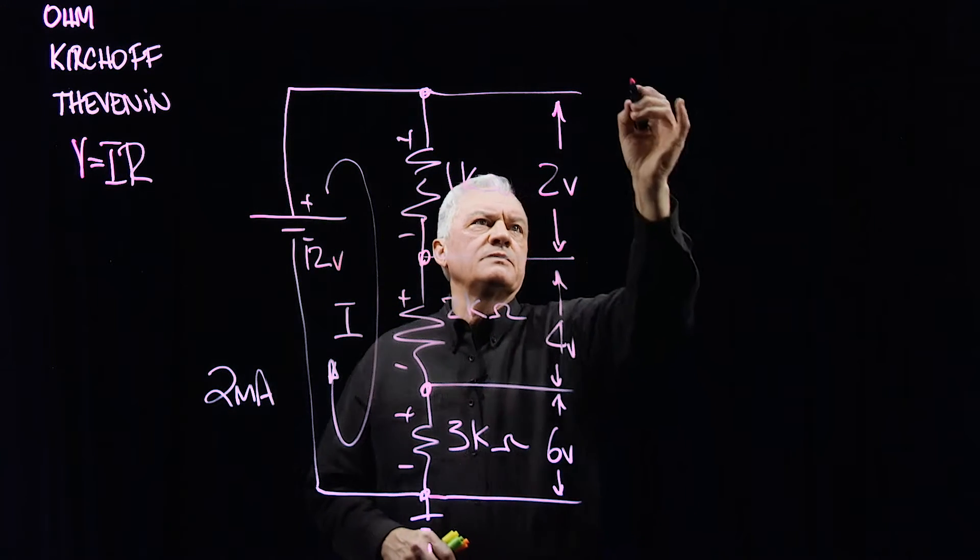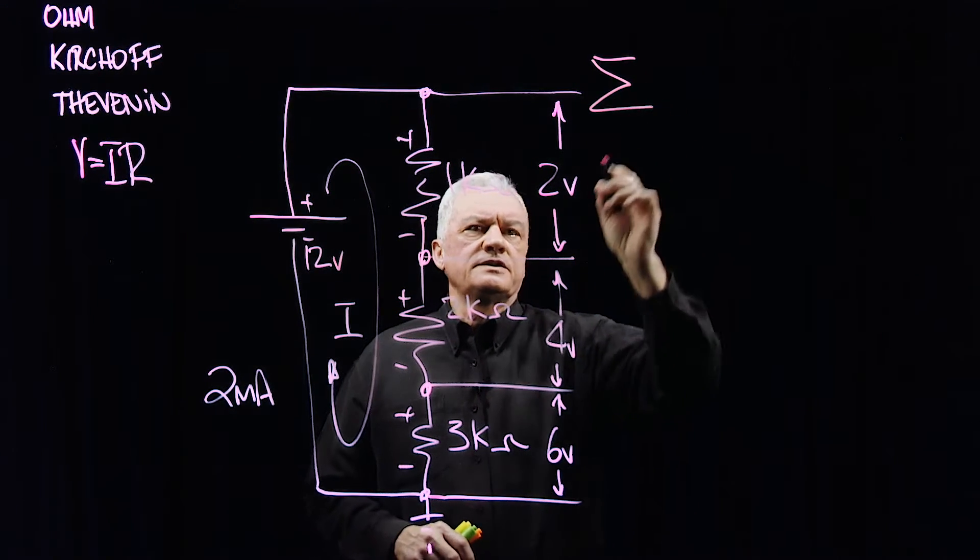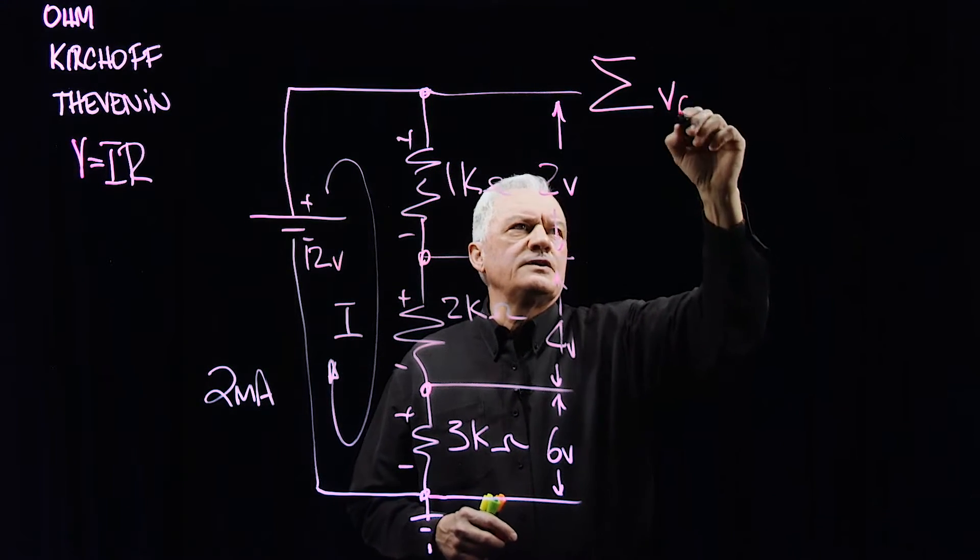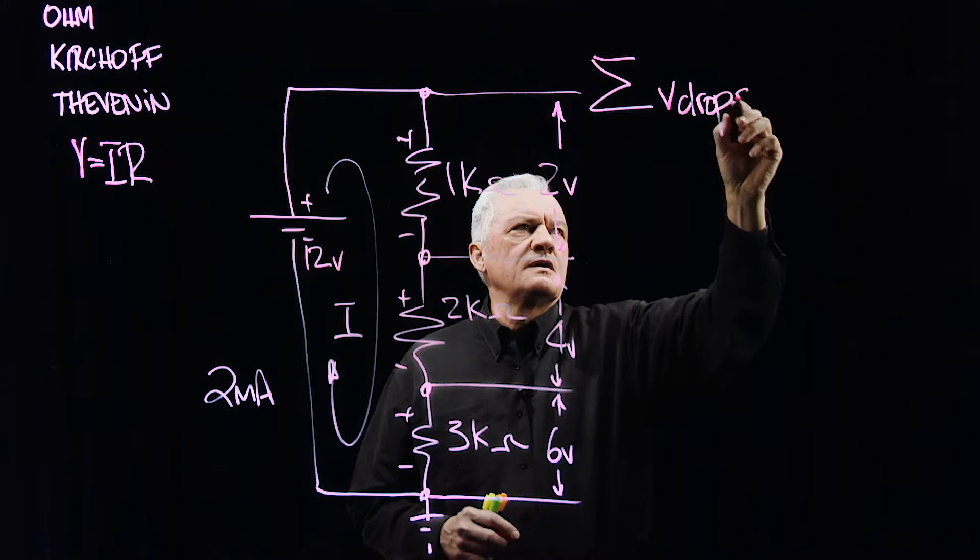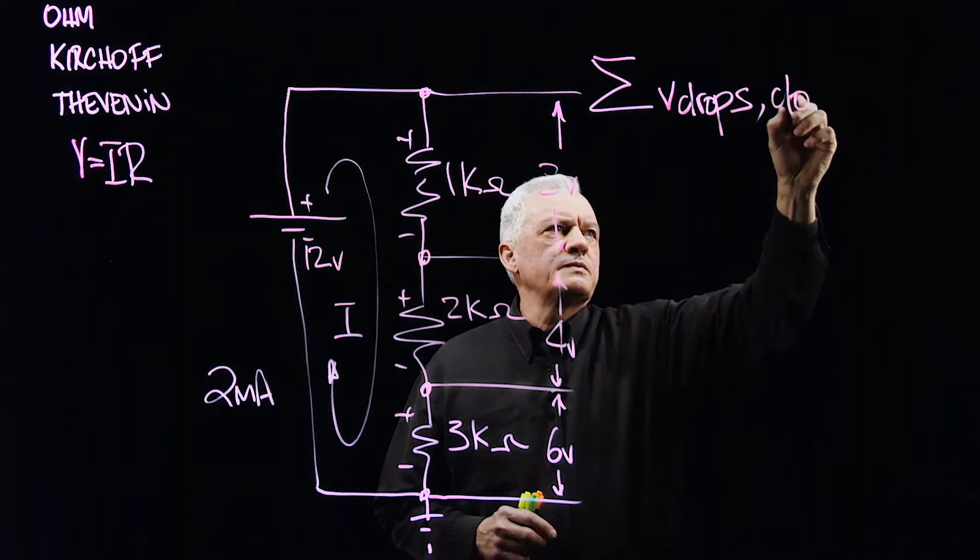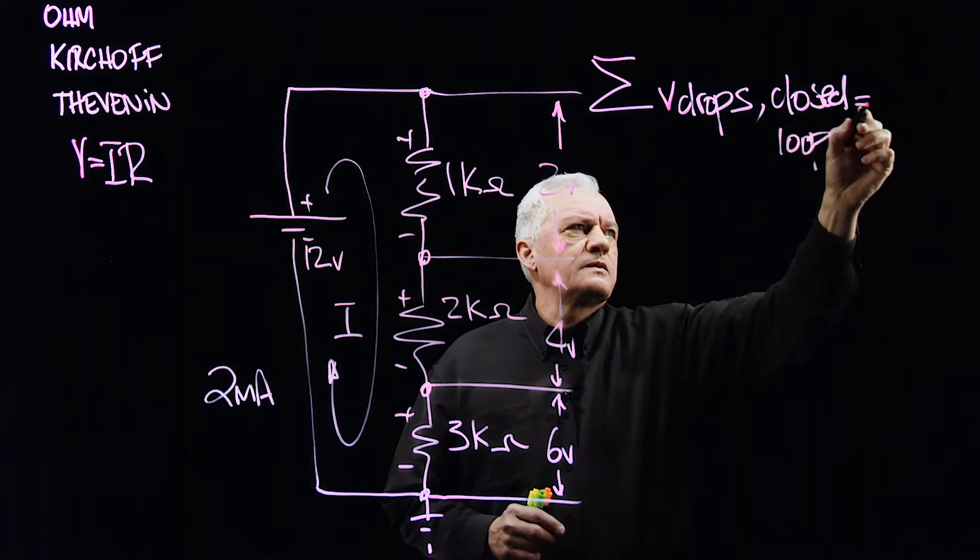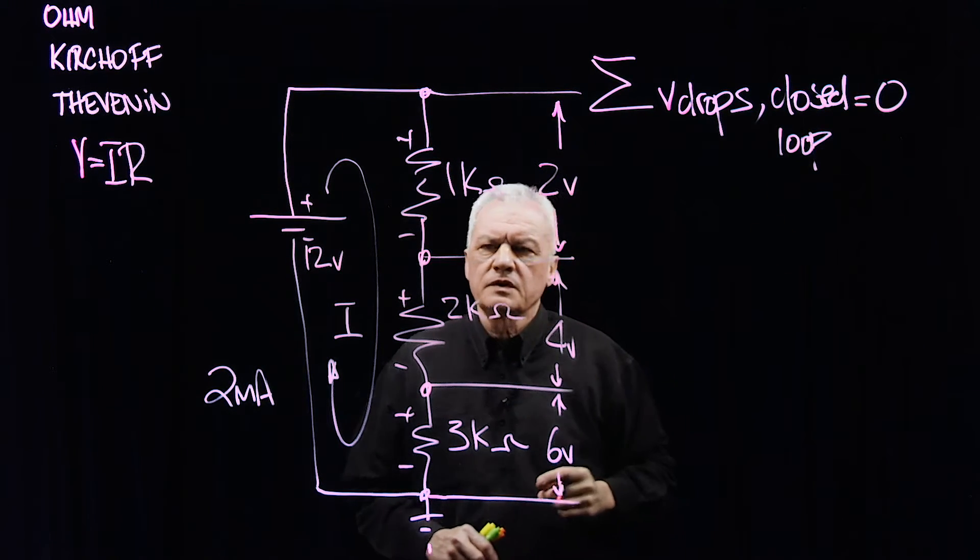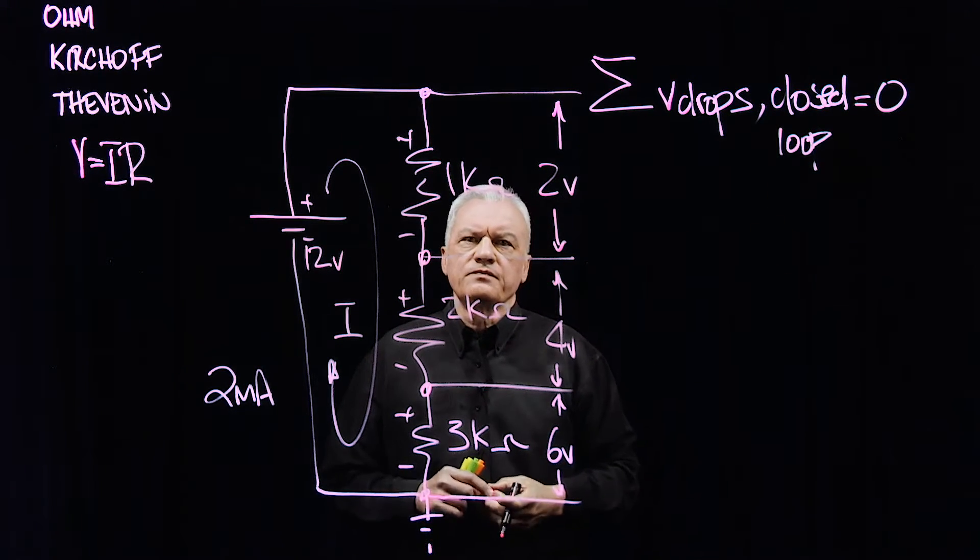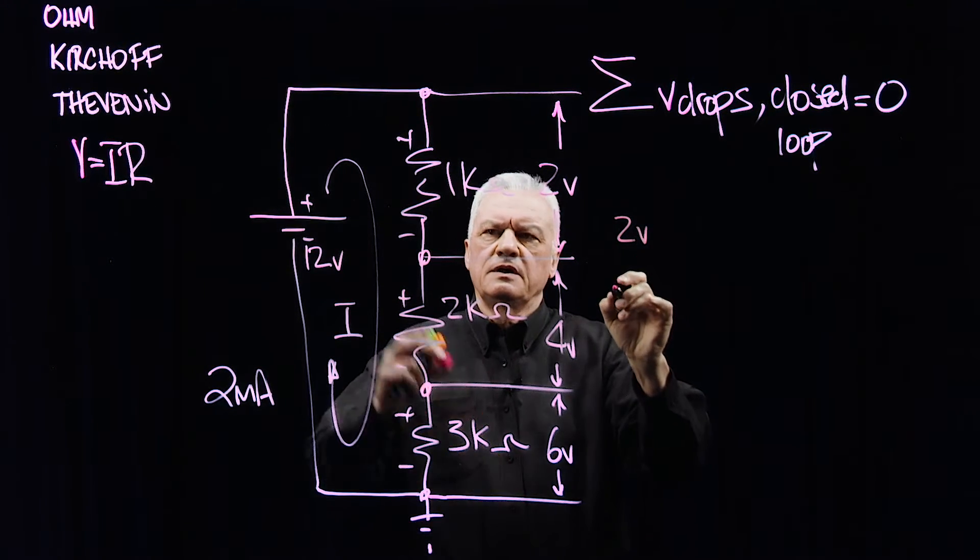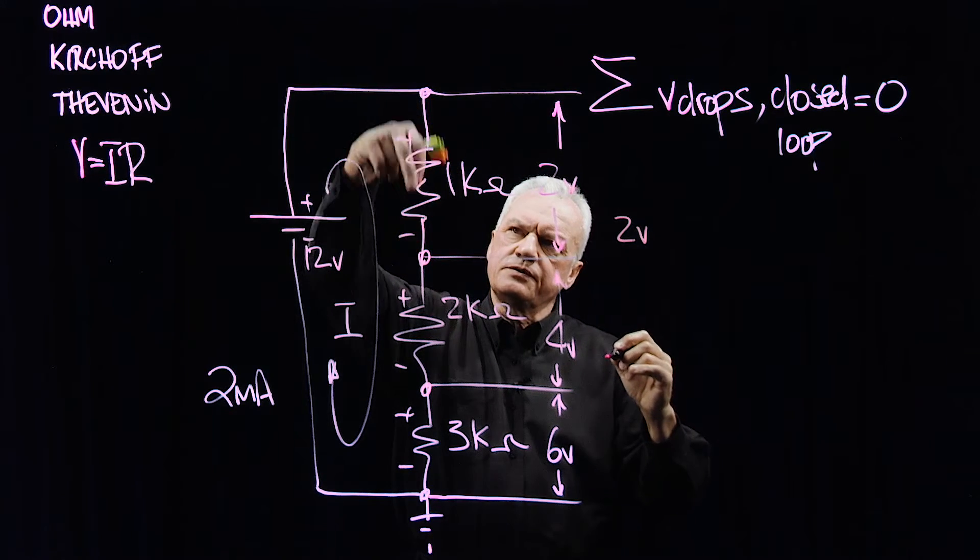Let me just use some abbreviated terminology. The sum, sigma, of the V drops around the closed loop equals zero. Let's see if that's true. Here we have R1, the voltage across R1, it was 2 volts. If I'm following the current through, so I would say plus.